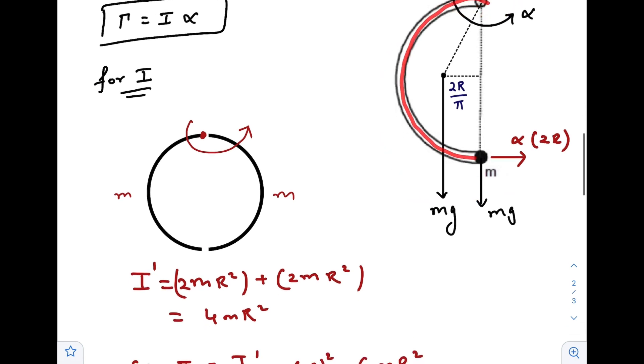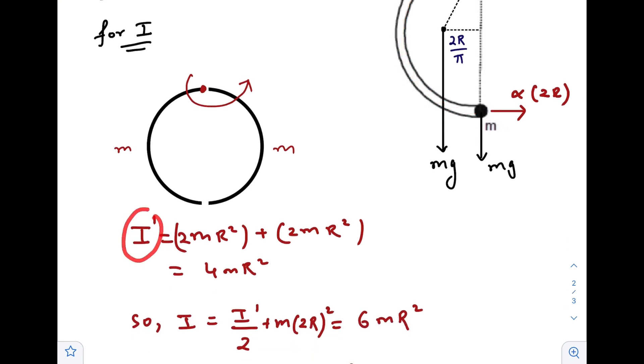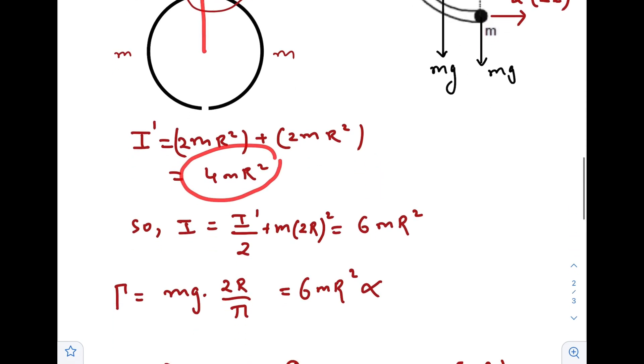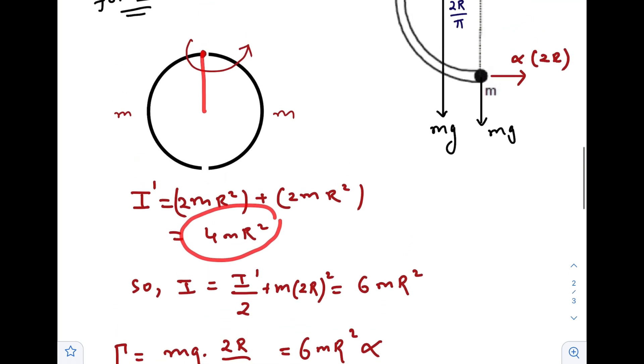First let us find out the moment of inertia of this semicircular ring, so that would be I prime. If there would have been a complete circular ring divided into two parts m and m, the whole mass would be 2m. So the moment of inertia of the whole structure with respect to this axis would have been 2mR squared. Using parallel axis theorem we would add another term 2mR squared, that gives 4mR squared.